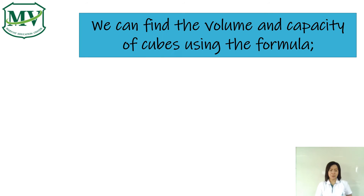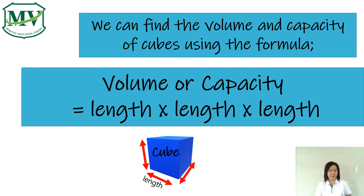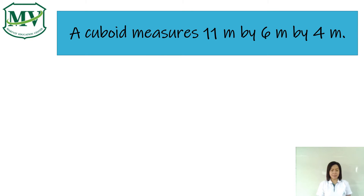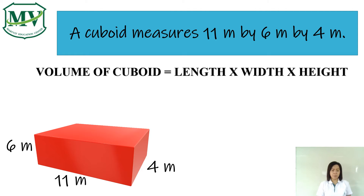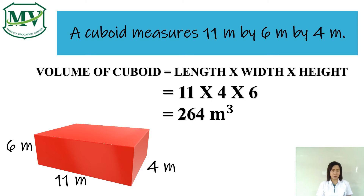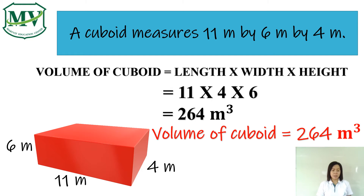Remember, to find the volume and capacity of cubes, we use the formula: volume or capacity is equal to length times length times length. A cuboid measures 11 meters by 4 meters by 6 meters. Let's find the volume of this cuboid. Since cuboids have three different measurements — length, width, and height — the volume is found using the formula: volume equals length times width times height. So, 11 times 4 times 6 equals 264 cubic meters. Therefore, the volume of this cuboid is 264 cubic meters.